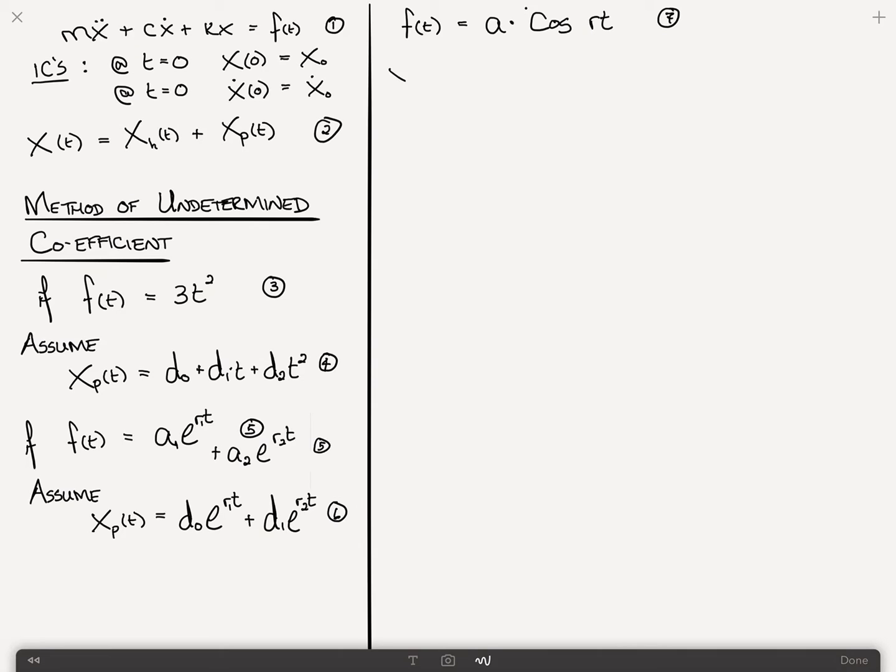So what do we do? We say that x particular of t is equal to d0 times cosine rt plus d1 times sine rt. Now, even though we've only got cosine on the right, we assume a solution of the form sine and cosine. If we had another term here that said cosine 2rt, we would have to say plus d2 cosine 2rt plus d3 sine 2rt. So whether or not we've got cosine or sine plus cosine, we have to assume both a cosine and a sine in the particular form of the response.